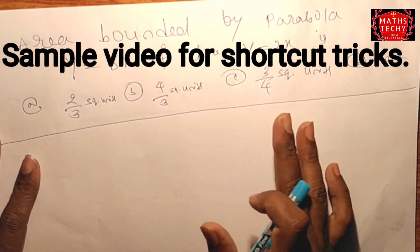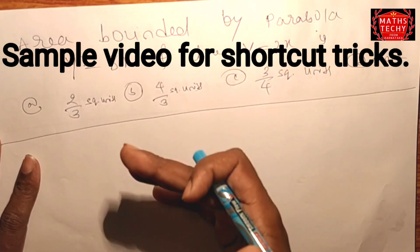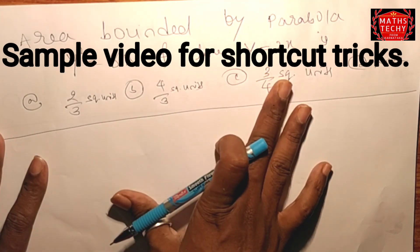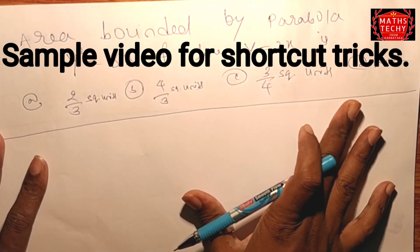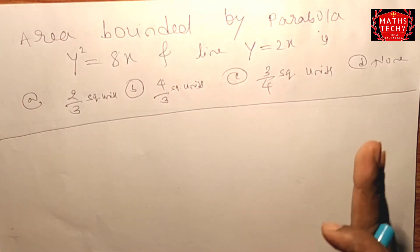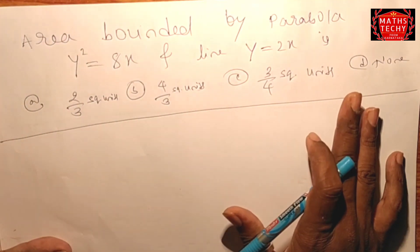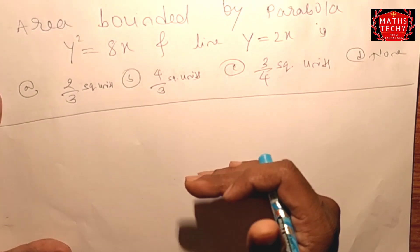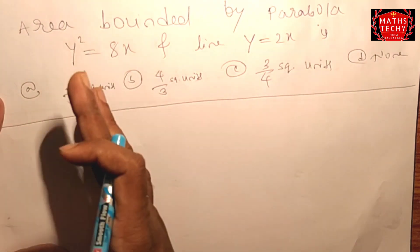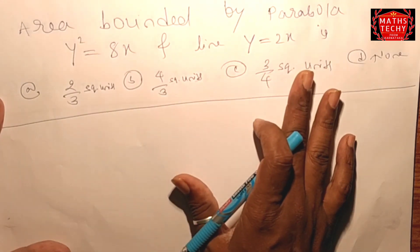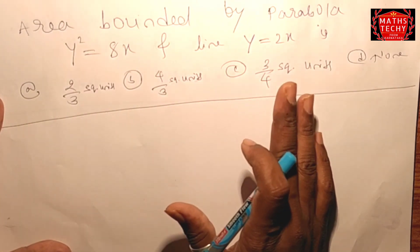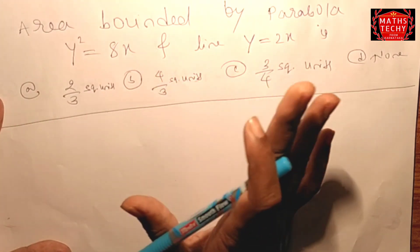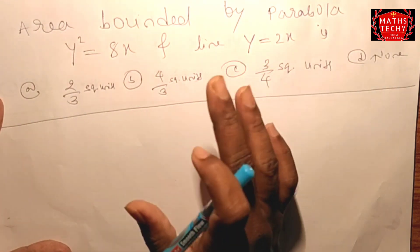Good evening, dear students. In this video, I will solve problems in the Karnataka CET area. I will solve the problem for the first time using a sample. In the first chapter, there are 30 to 50 shortcut tricks, and then you can crack the KCT exam.